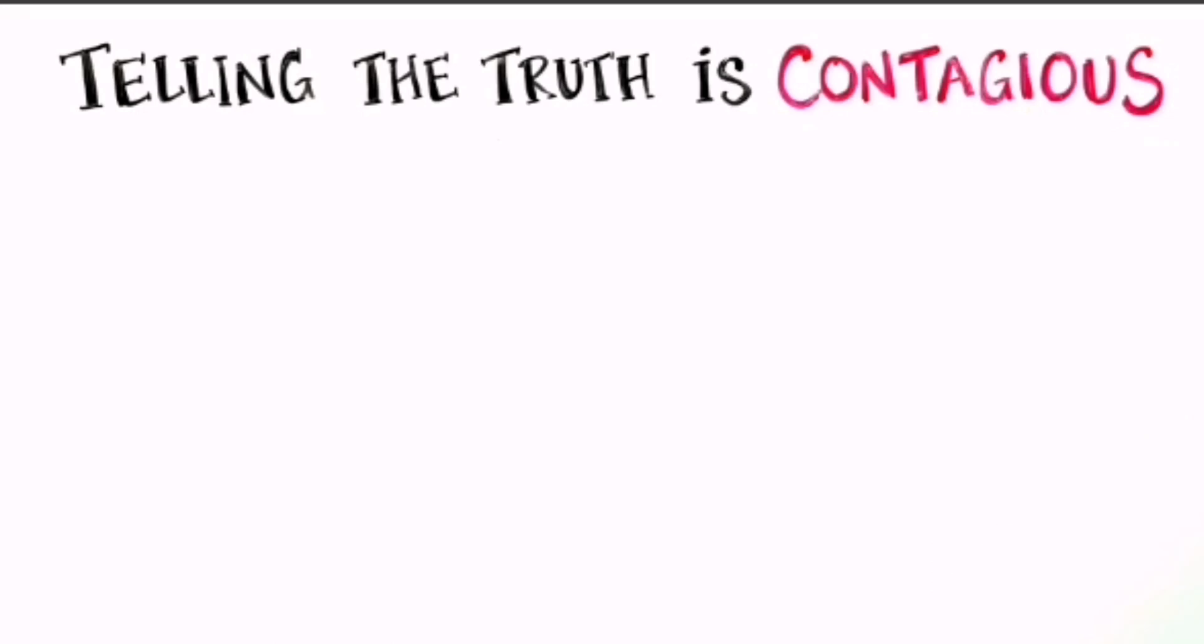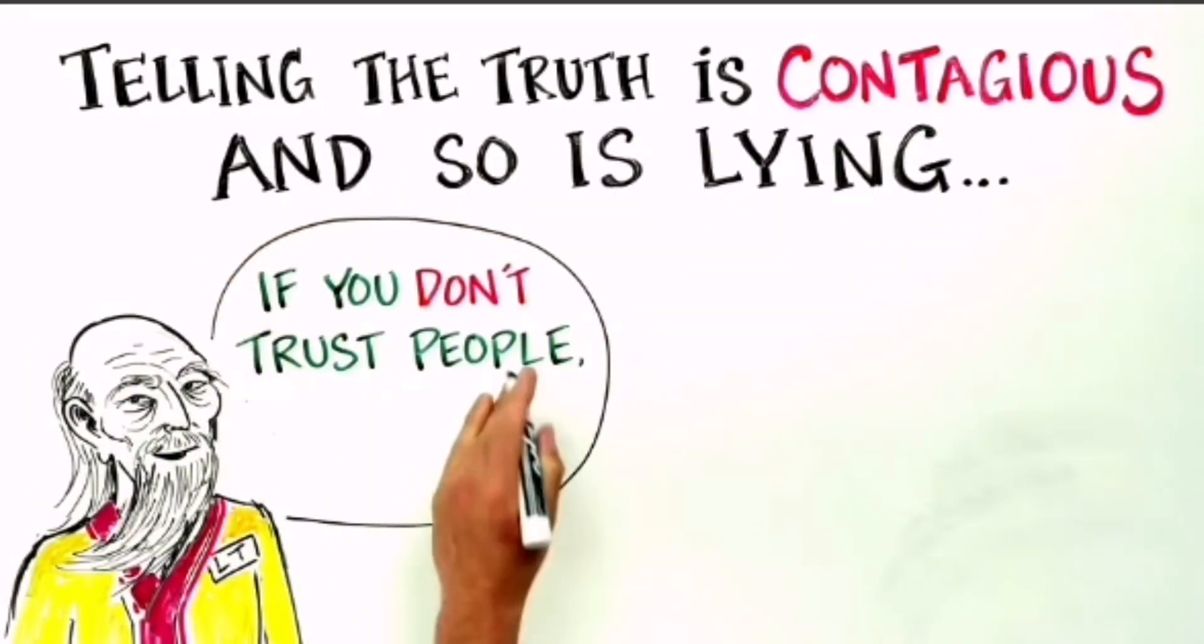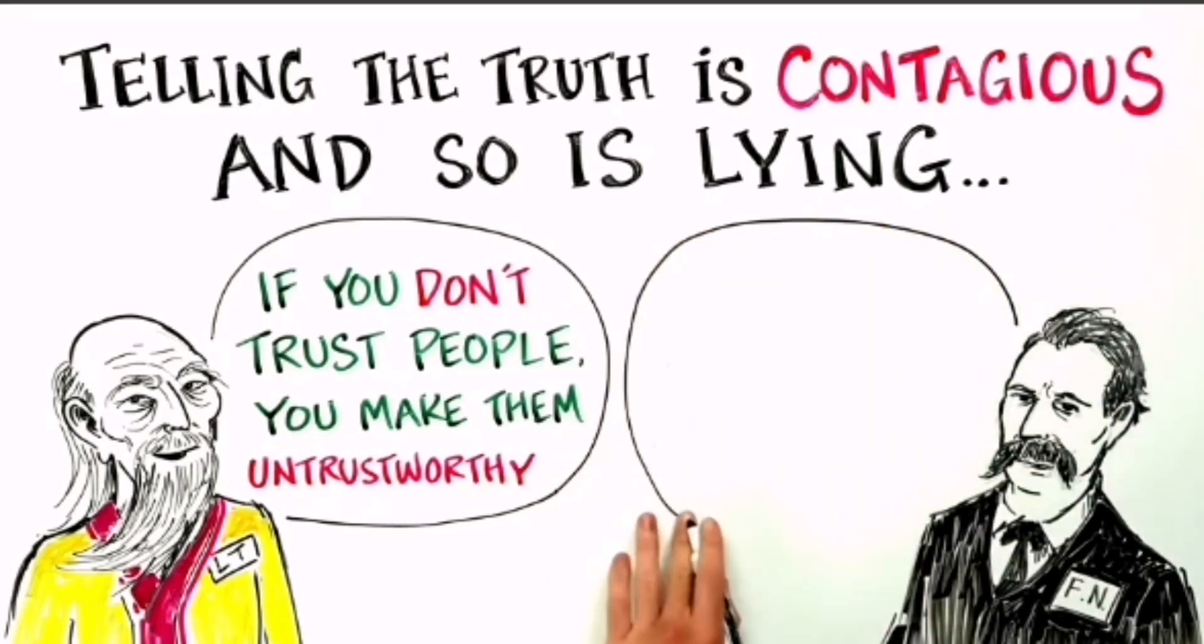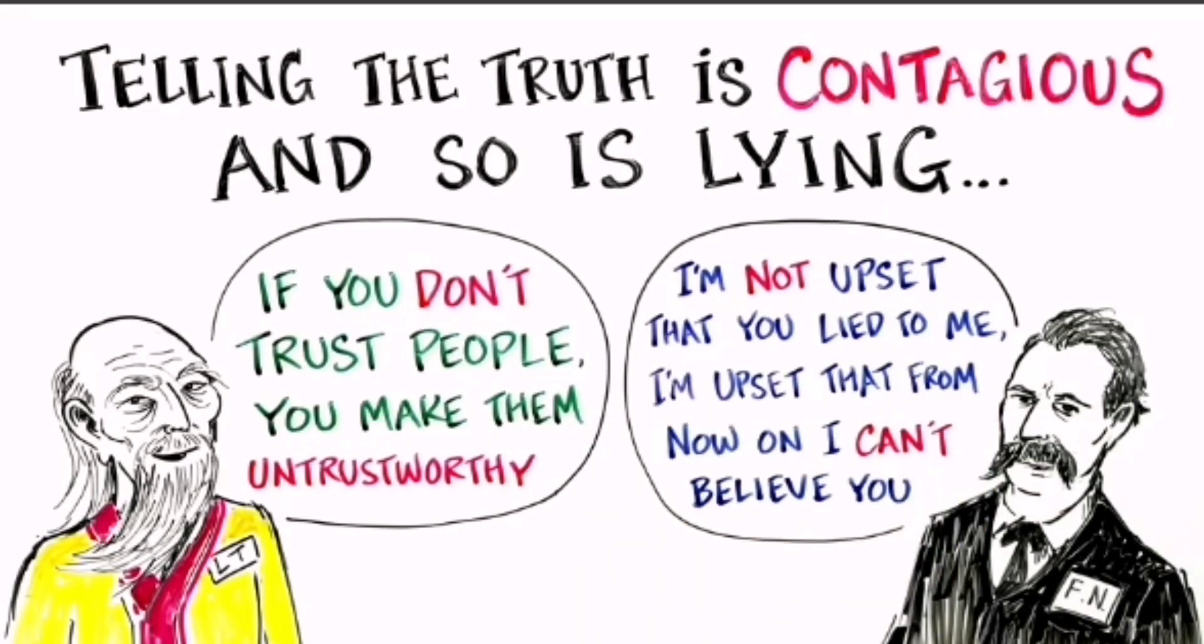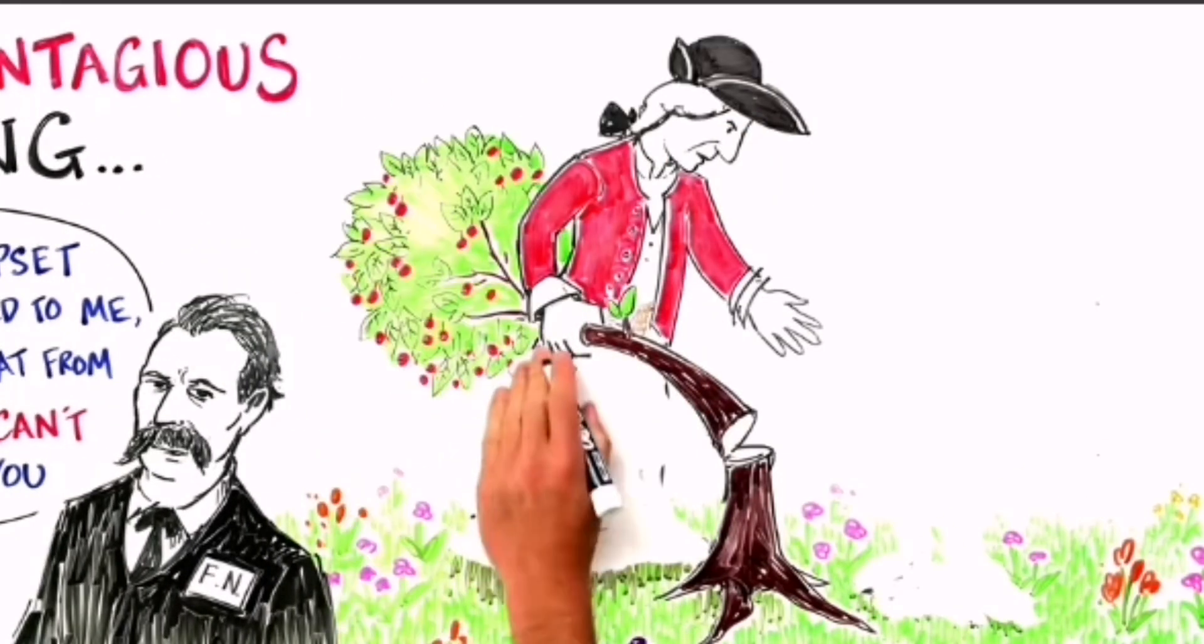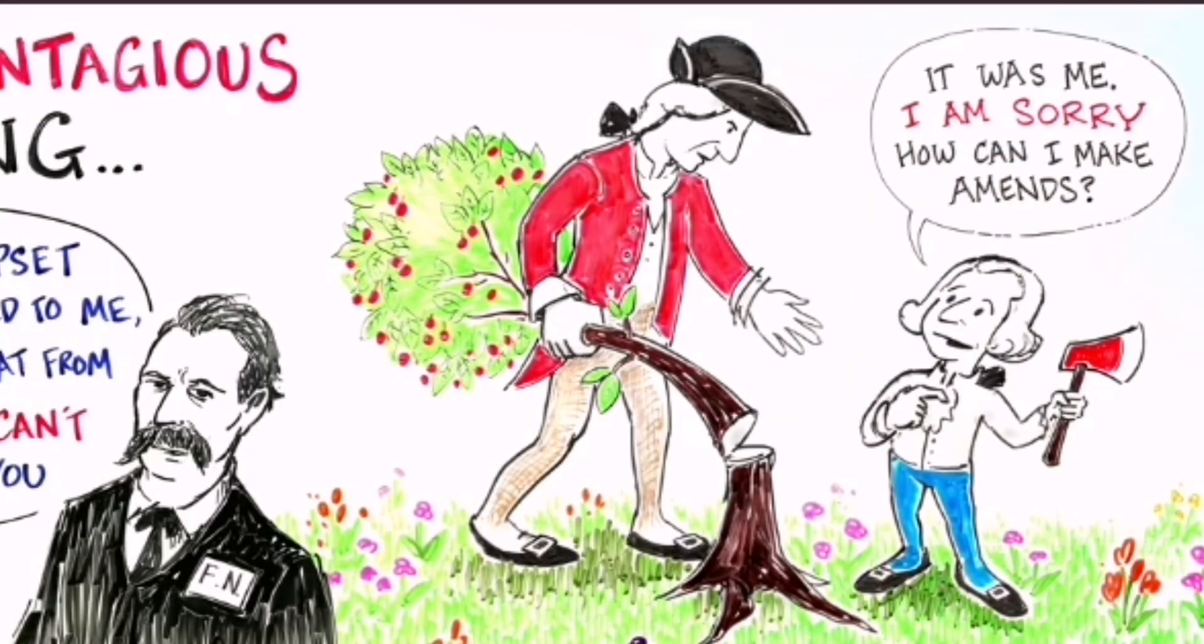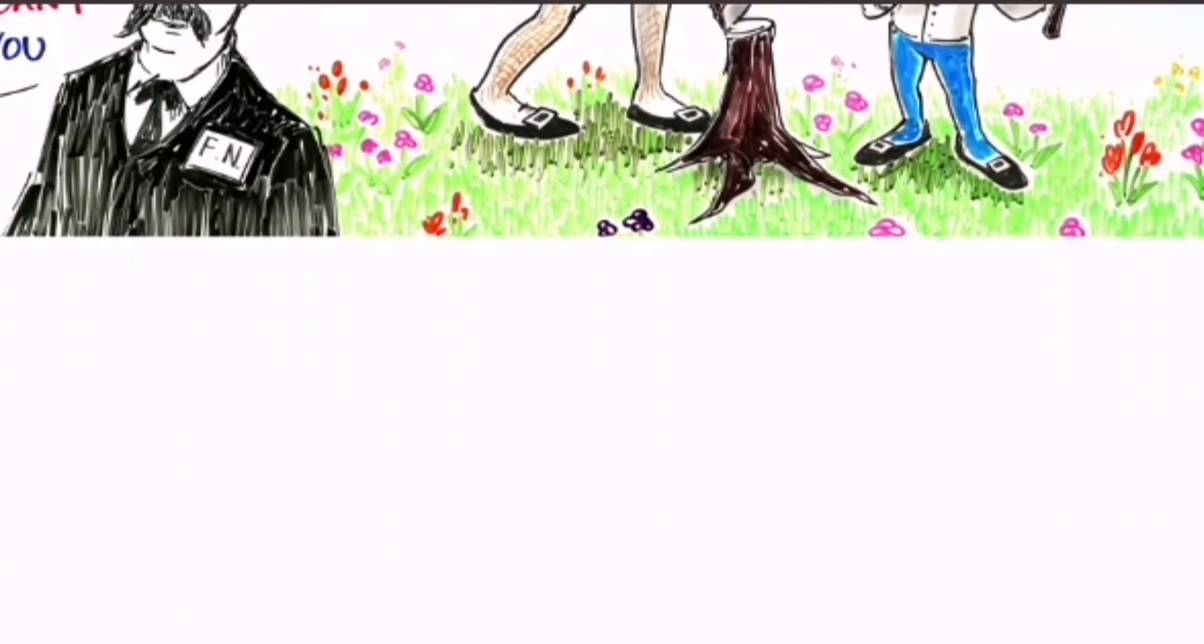Truth-telling is contagious, and so is lying. Lao Tzu wrote, if you don't trust people, you make them untrustworthy. Trust is something that takes time and effort to build and can be destroyed in an instant. Friedrich Nietzsche wrote, I'm not upset that you lied to me. I'm upset that from now on, I can't believe you. Telling the truth is a two-way street. By being open and honest with others, we inspire them to be open and honest with us. If you don't trust yourself, you will live in fear that others will betray you. So honesty starts with not lying to yourself and this honesty has a contagious effect.